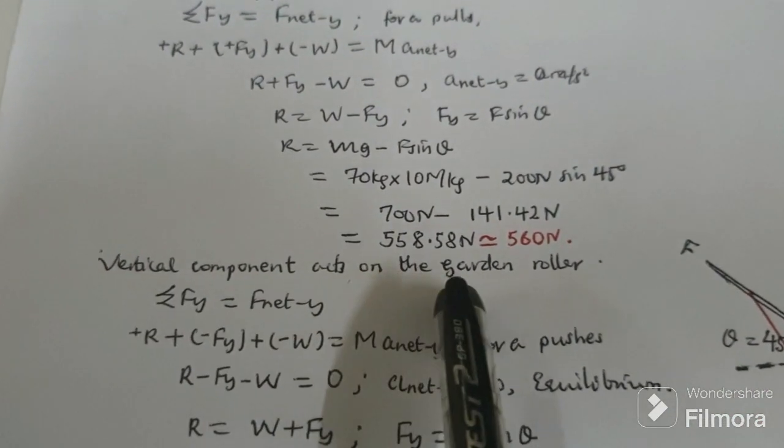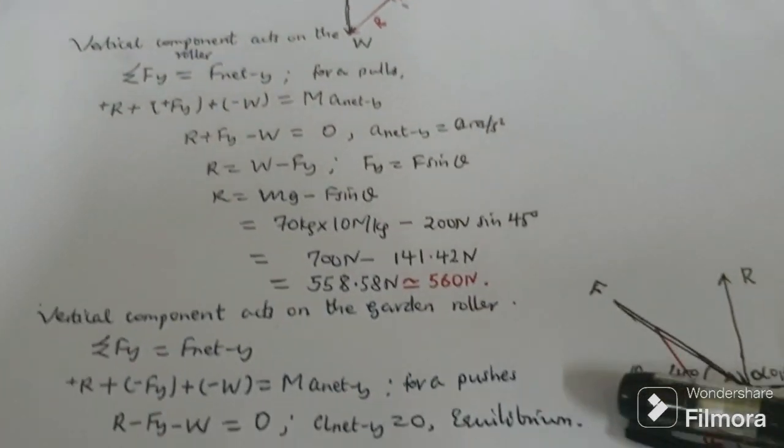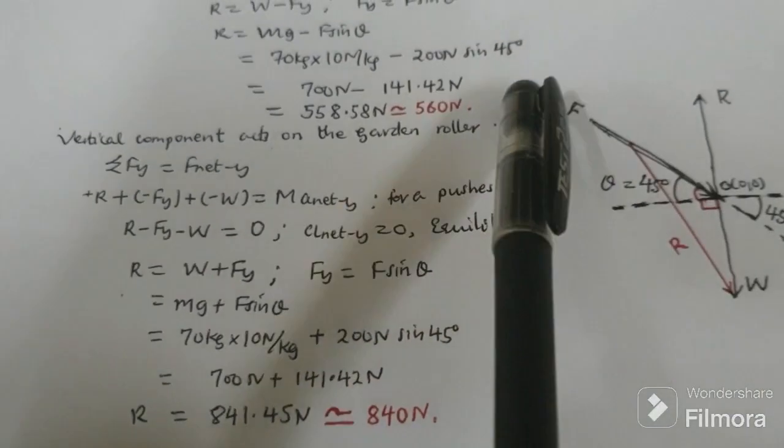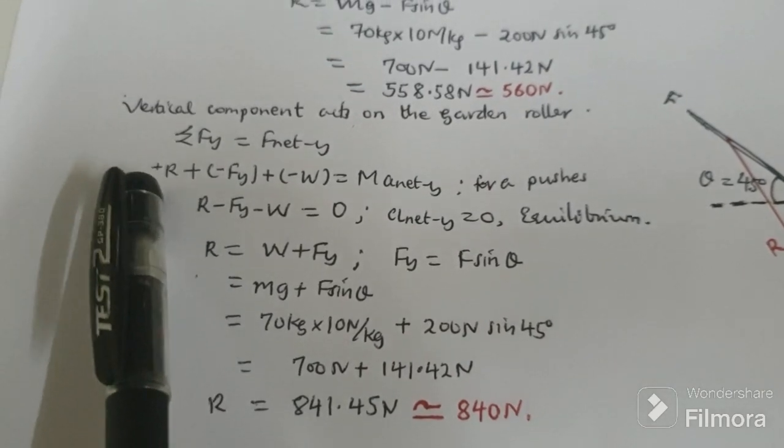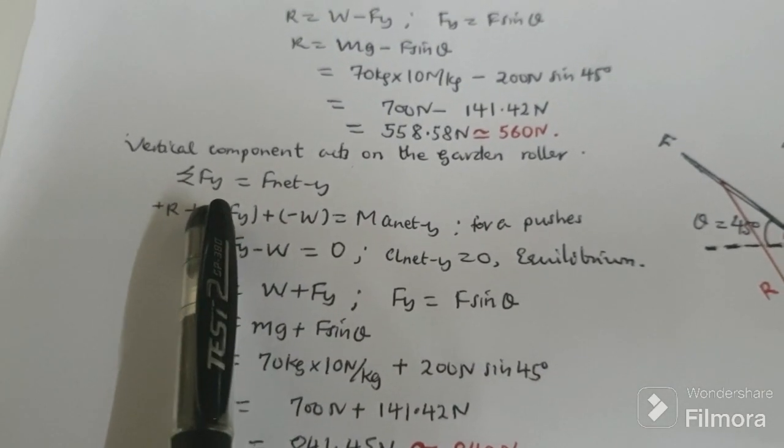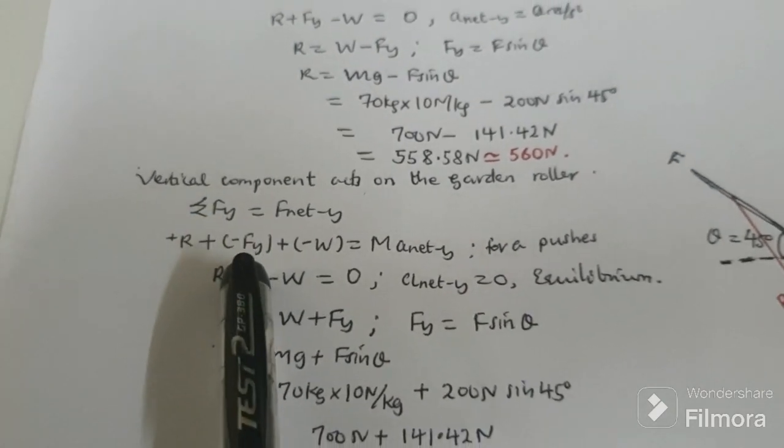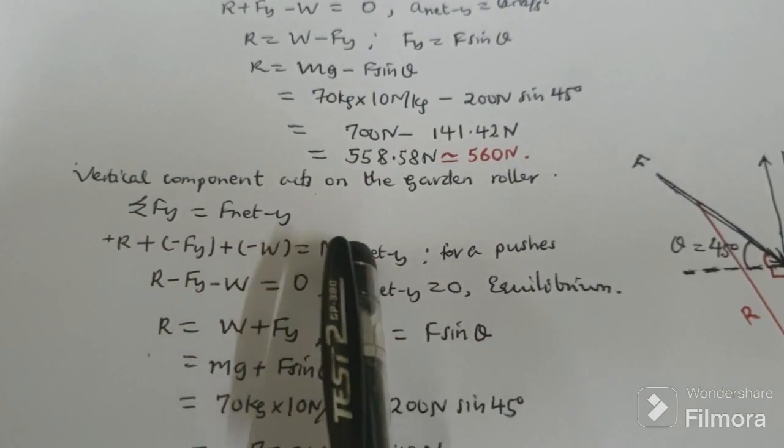Now for vertical forces for the second case on the garden roller when he pushes, when he pushes the garden roller, our applied force moves downwards. And now we have our positive and our vertical forces, the component of applied force is moving downwards, is negative now. And the weight is negative.